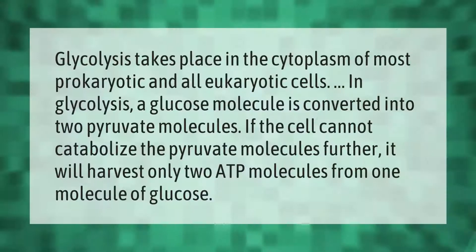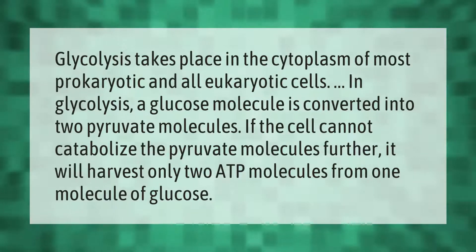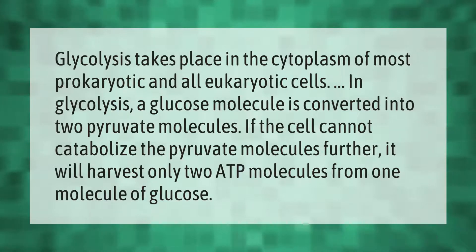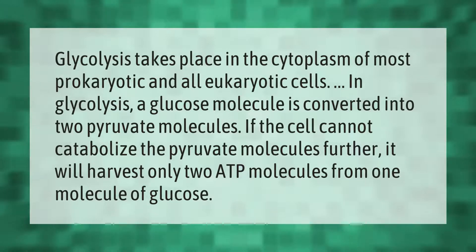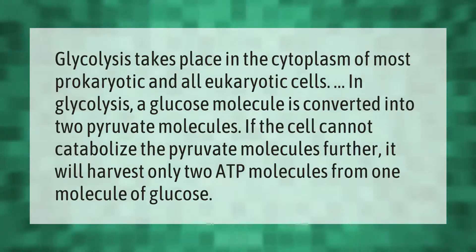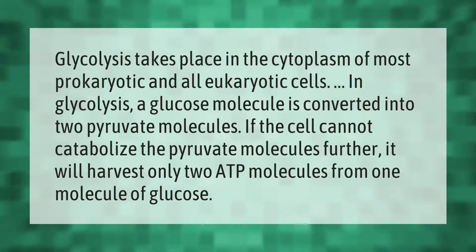Glycolysis takes place in the cytoplasm of most prokaryotic and all eukaryotic cells. In glycolysis, a glucose molecule is converted into two pyruvate molecules. If the cell cannot catabolize the pyruvate molecules further, it will harvest only two ATP molecules from one molecule of glucose.